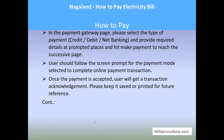Once you hit 'Pay Now,' you will be taken to the payment gateway page. Select the appropriate payment gateway of your choice and complete the on-screen prompts to make the payment. Once everything is finalized, you will receive an acknowledgement for the transaction. Please keep it safe for future reference as proof that you paid your electricity bill through the web portal.